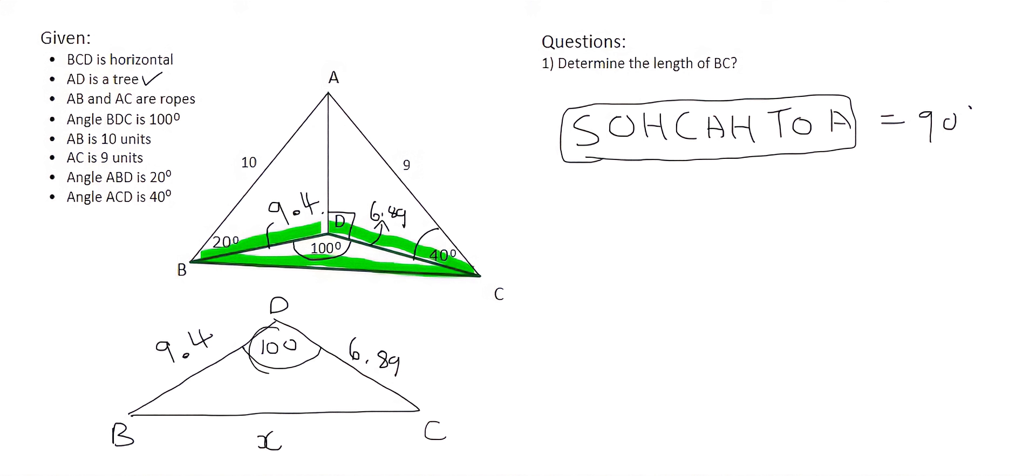We have 100 degrees over here opposite to the side that we want, which is BC. Then we have this 9.4 opposite to this angle over here. But we don't have that angle and we could call it Y for example, but then we have two unknowns. Can you see that? We have X and Y. This only works if we have one unknown. So unfortunately the sin rule is not going to work.